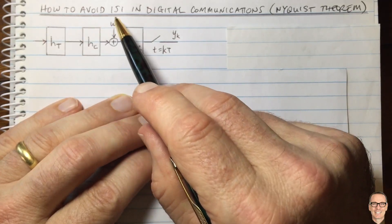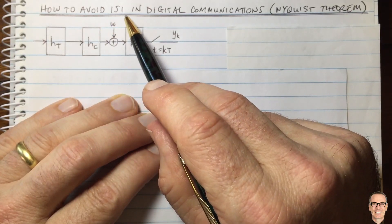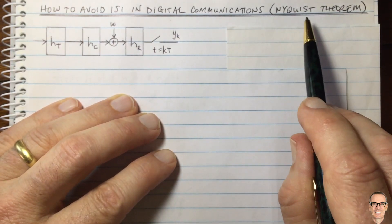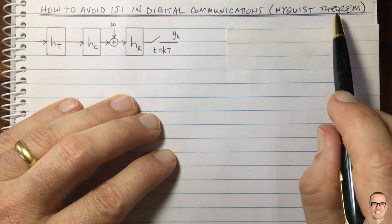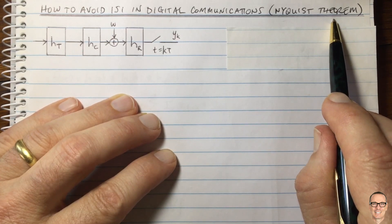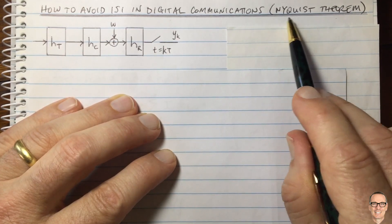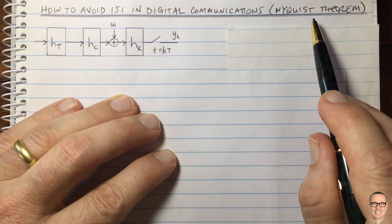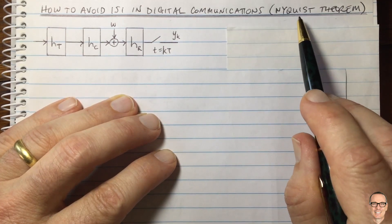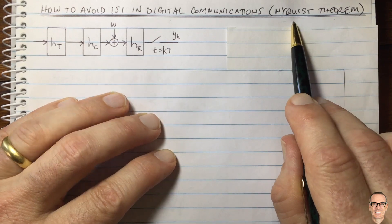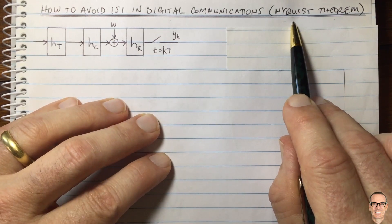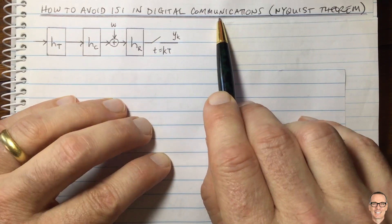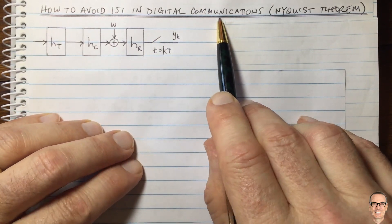Let's look at how to avoid inter-symbol interference in digital communication systems. We're going to look at a result called the Nyquist theorem — not the most well-known Nyquist theorem relating to sampling of continuous time signals, but another theorem due to Nyquist that talks about the maximum rate of sending data in a digital communication system.